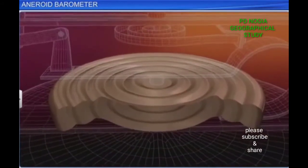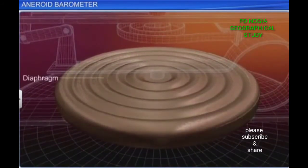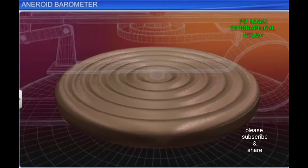The top surface is made of a corrugated metallic sheet and acts as a diaphragm. The metallic box expands or contracts in accordance with changes in atmospheric pressure.